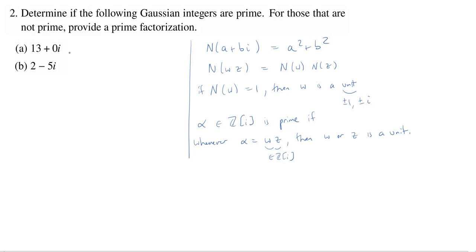What it's going to turn out is that this 2 minus 5i is prime and that 13 is not prime. That shouldn't be necessarily obvious, but let's see how this is going to work.